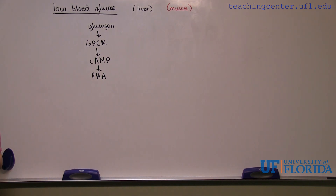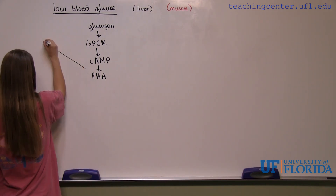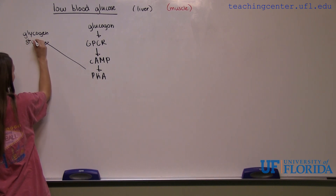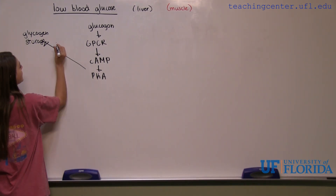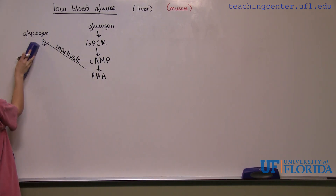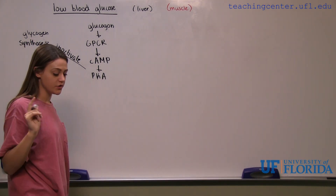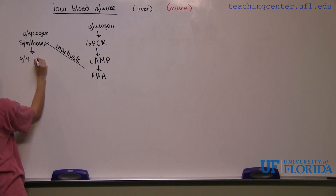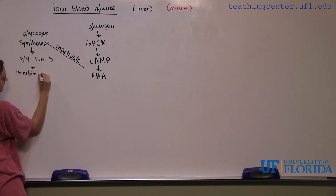First we're going to discuss glycogen storage. If we have low blood glucose, do we want to build glycogen and store it? No — we're already low on blood glucose, we need all the glucose we have. So we're going to inactivate glycogen synthase, which is going to inhibit glycogen storage. If you inactivate glycogen synthase, you put it in the b form — glycogen synthase b — and this inhibits glycogen storage.